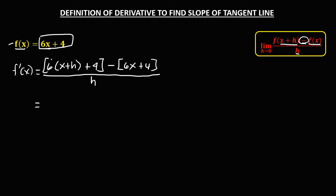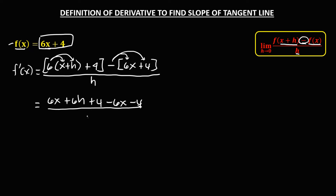Then simplify. Distribute: 6 times x is 6x, 6 times h is plus 6h, then plus 4. For the second group, distribute the negative: so we have negative 6x and negative 4, all over h. Combining like terms: 6x and negative 6x cancel to 0, positive 4 and negative 4 cancel to 0, so we only have 6h over h. Cancel h, so therefore f prime of x is equal to 6.